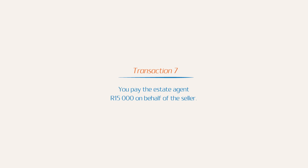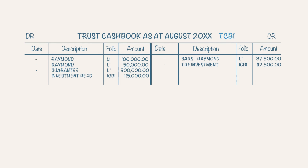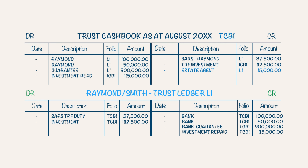Transaction 7: You pay the estate agent R15,000 on behalf of the seller. You credit the trust cash book as the funds are paid, and you debit the trust ledger of Raymond/Smith as the payment is made on their behalf.